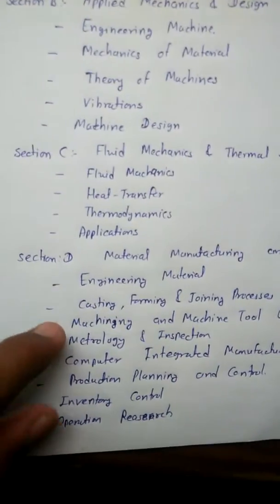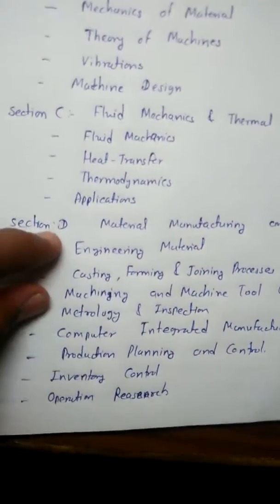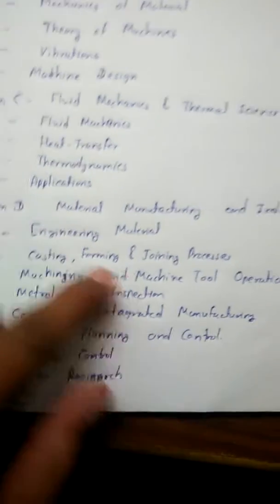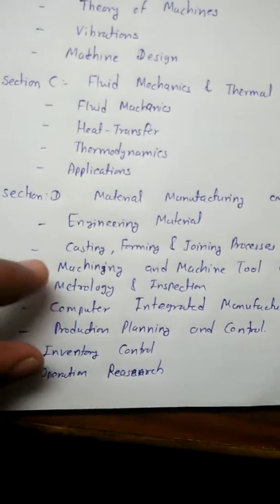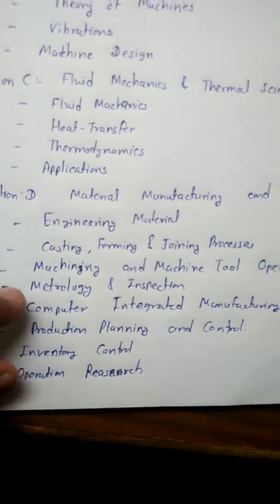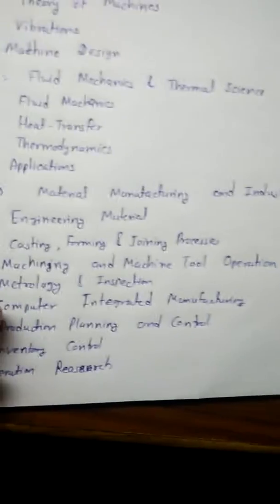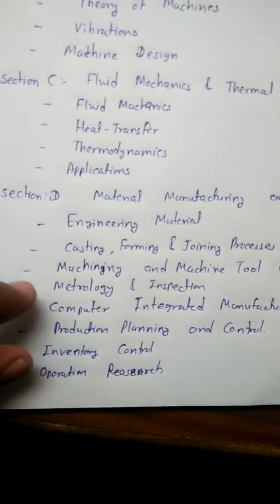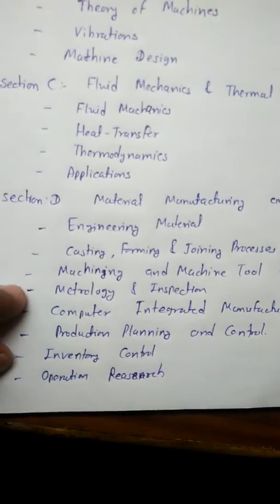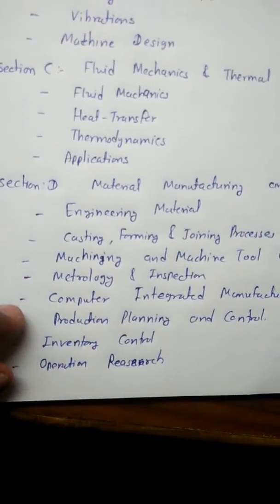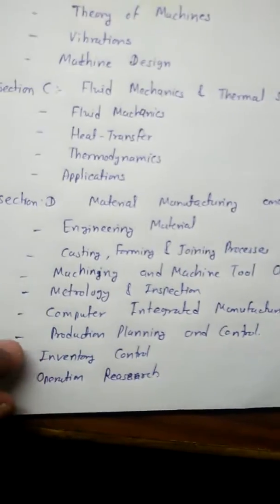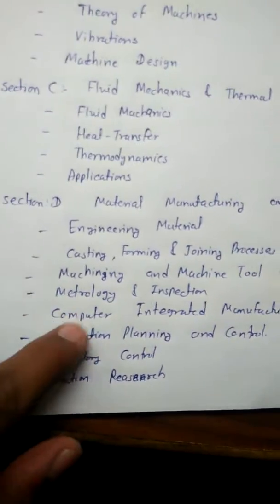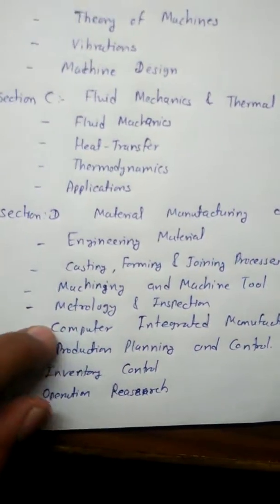After Section C, we go to Section D: metal manufacturing and instruments, engineering materials, casting, forming and joining processes, machining and machine tool operations, metrology and inspection, and computer integrated manufacturing — this is the most important part.